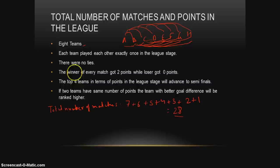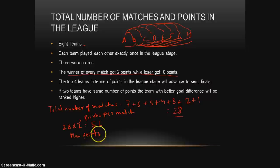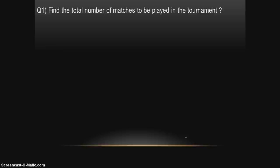With 28 matches and 2 points per match, the total points at stake are 28 times 2 equals 56 points. The maximum points a team can have is 7 wins times 2 points equals 14. The minimum is 0. Armed with this knowledge, let's try to solve the questions.